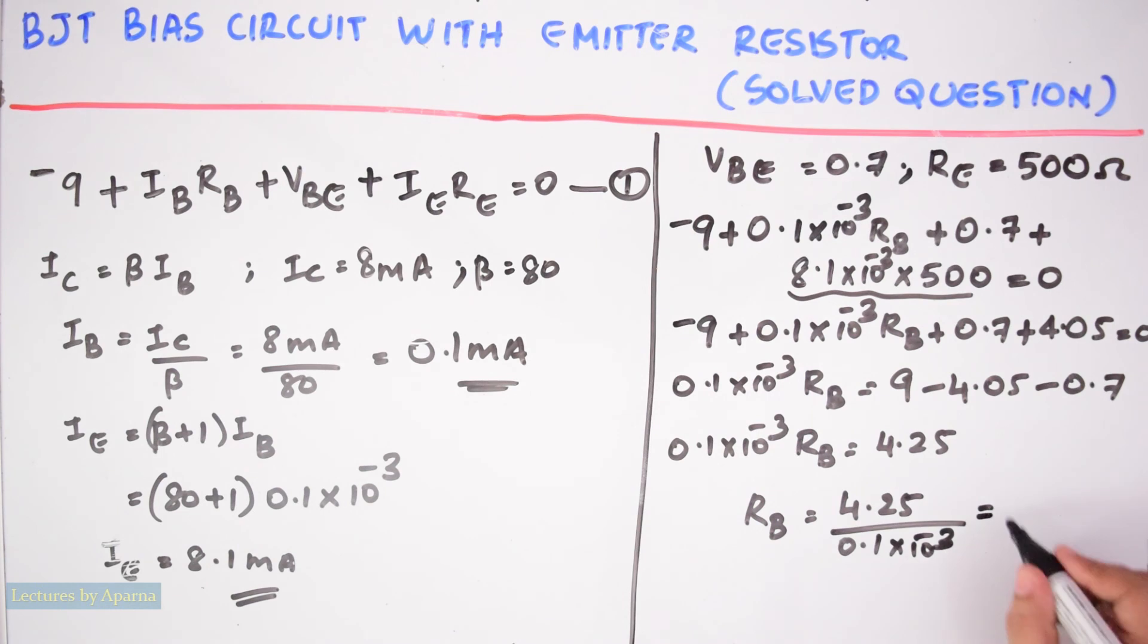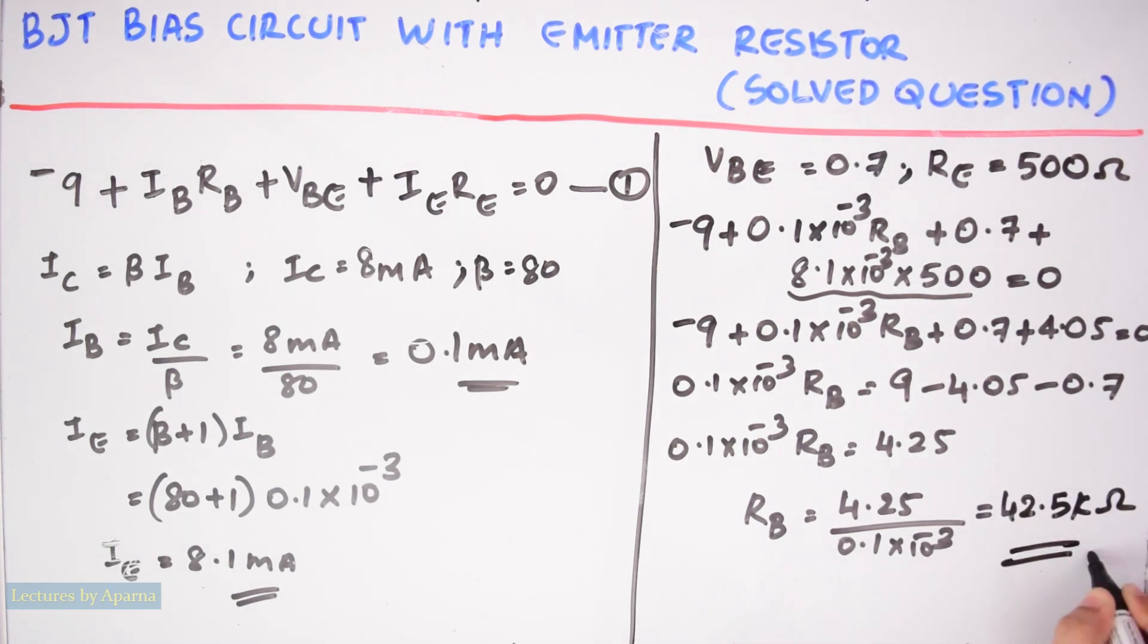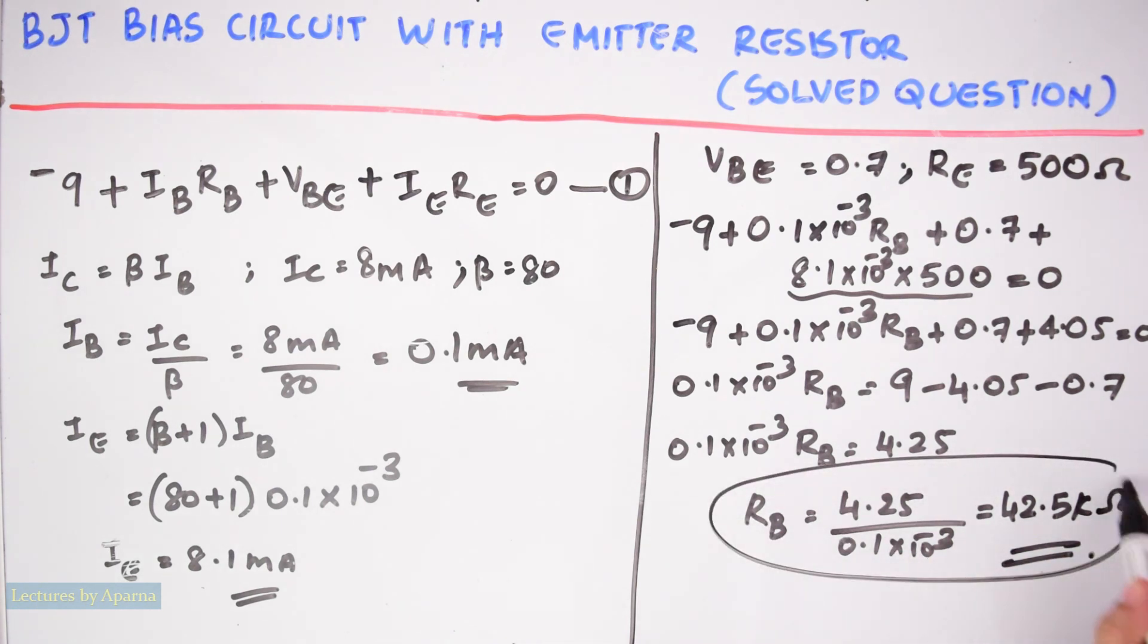We can write RB is equal to 4.25 divided by 0.1 into 10 raise to minus 3. This will be equal to 42.5 kilo ohm.